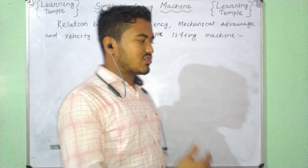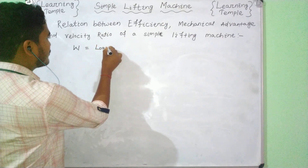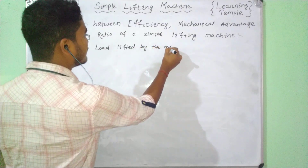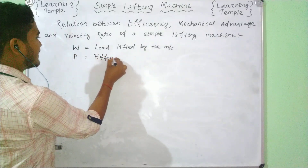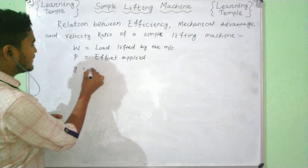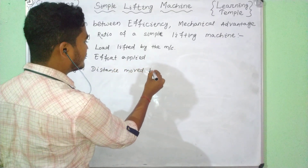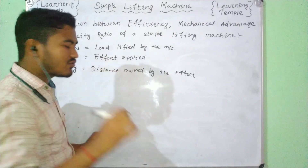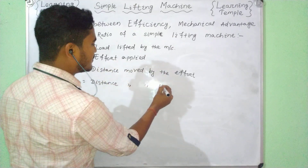So, first: W is the load lifted. Similarly, P is the effort applied. At each variable, y is the distance moved by the effort — small y, distance moved by the effort. And small x is the distance moved by the load.